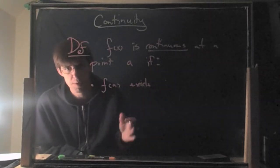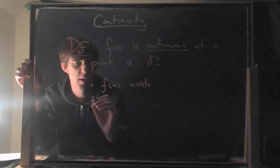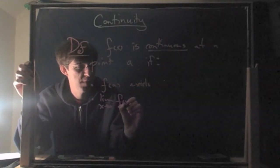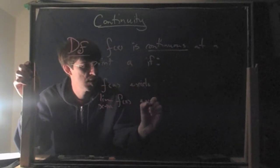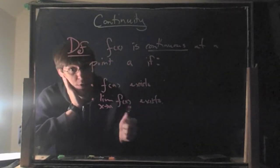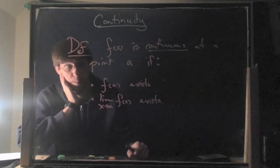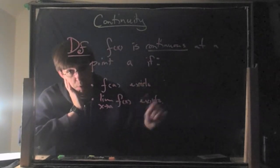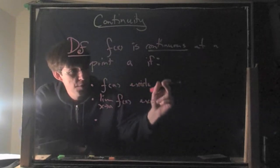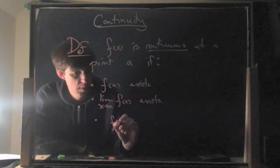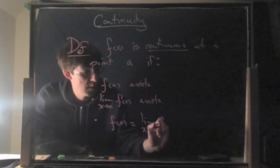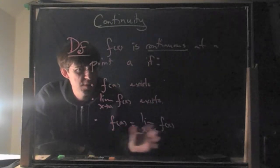Think about it: if there's no value of the function, that means automatically there's a hole in the graph — not continuous. The second condition is that the limit as x approaches A of f(x) exists — not only is there a value at this point, but there are also values at all the nearby points. The curve approaches this point in a nice way and approaches some kind of value. The third property is that these two things are equal: f(A) equals the limit as x goes to A of f(x).